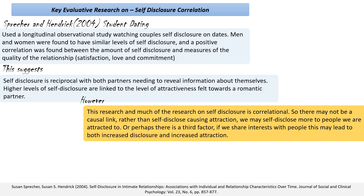Or maybe there is no direct link between them and there's a third factor involved. Maybe if we share interests with somebody, this leads both to increased self-disclosure and increased attraction, but the self-disclosure and attraction aren't really linked to each other. This lack of evidence of causality in correlational research is really important in psychology and can be applied to any study that is correlational in nature.